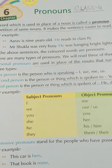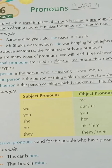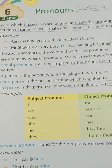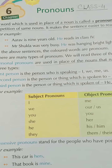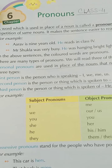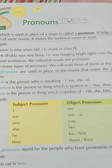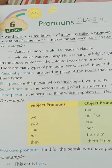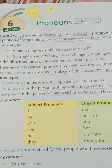So in place of Aurof you can use 'he', or if it is a girl's name, you can use 'she'. It is easier because we don't have to take the name two times. For example: Mr. Shukla was very busy — he was hanging bright lights over the house. In the above sentence, the colored words are pronouns. There are many types of pronouns; we will read three of them in this class.